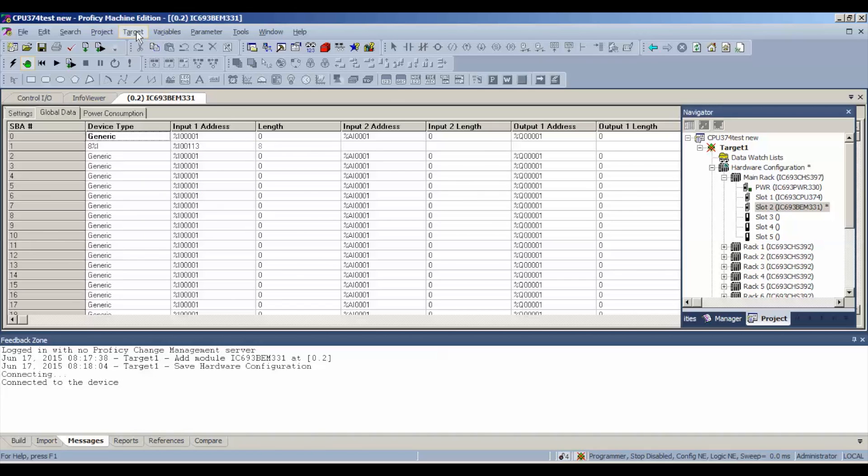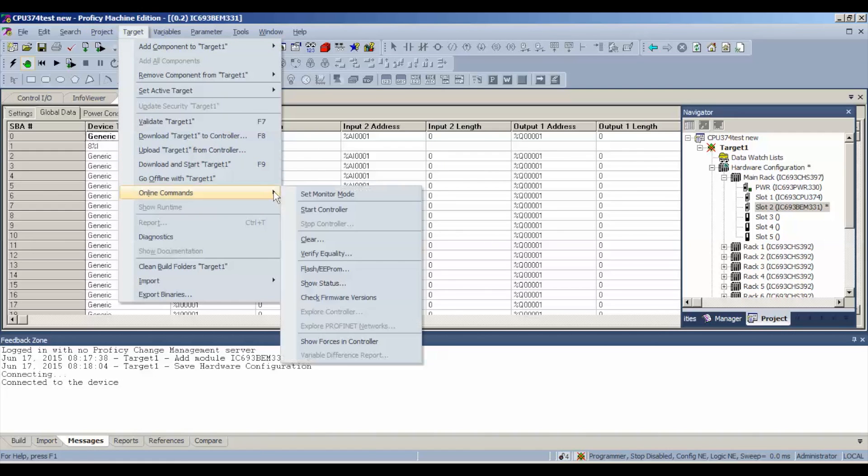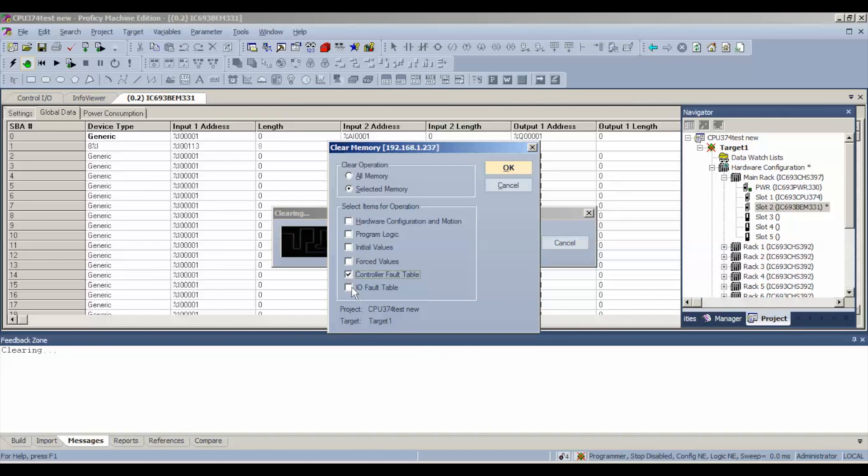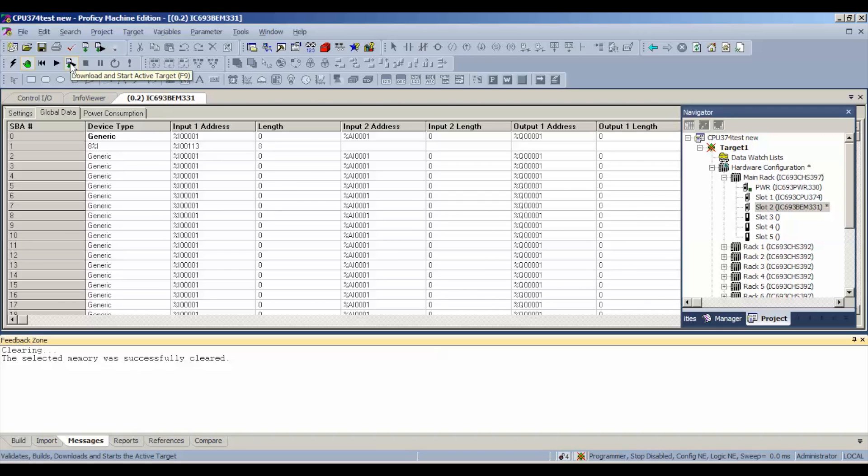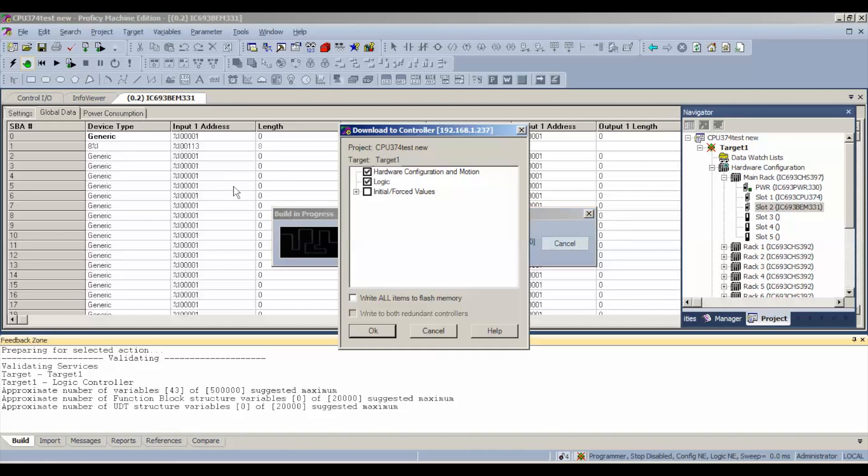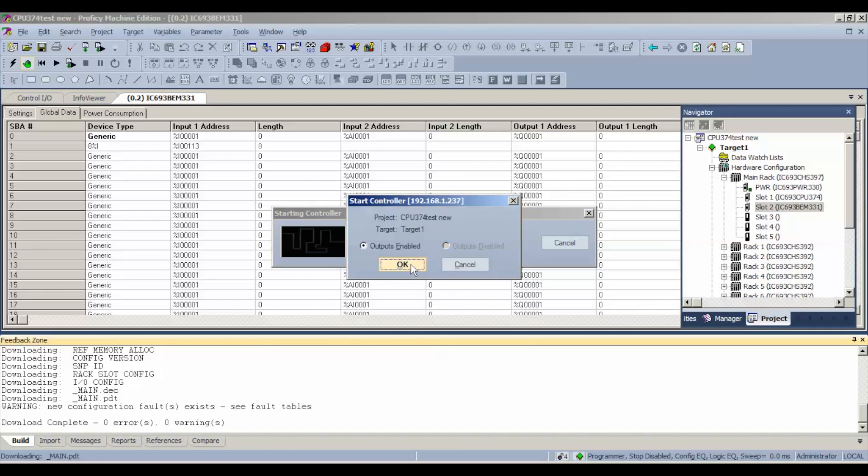Now, if you look down below, my status of the processor right now is programmer mode. It's stopped, meaning not in run mode. Inputs and outputs are disabled, and the configuration and logic are not equal. What we're going to do in that case is go to target, online commands, clear, controller and I/O fault tables. You want to do that to make sure we don't get hung up when we do this part of the download and start active target. For this test, it's just going to be hardware configuration and motion and logic. We don't need to write anything to permanent flash memory. Select okay and enable the outputs, yes.